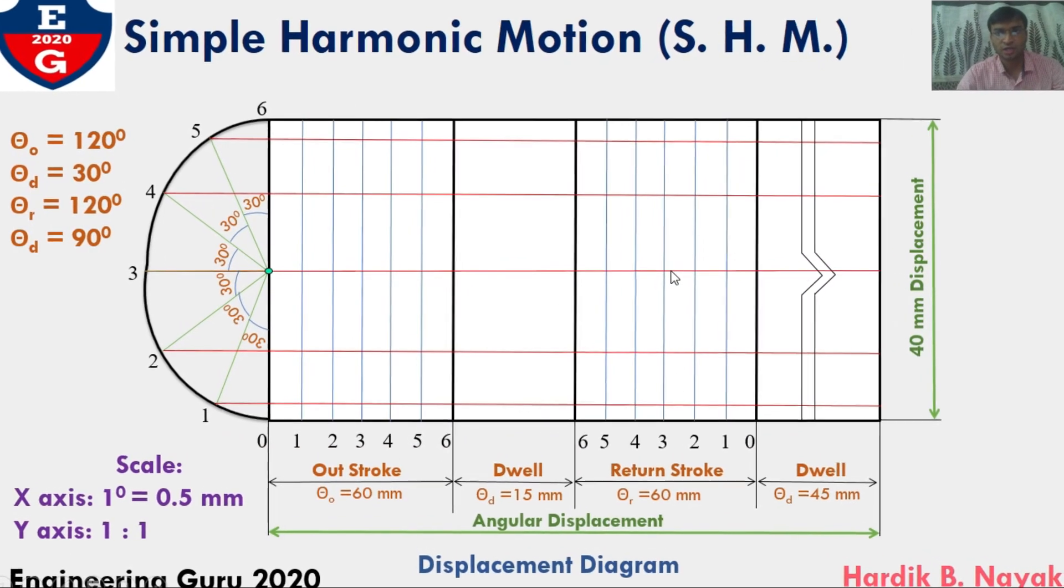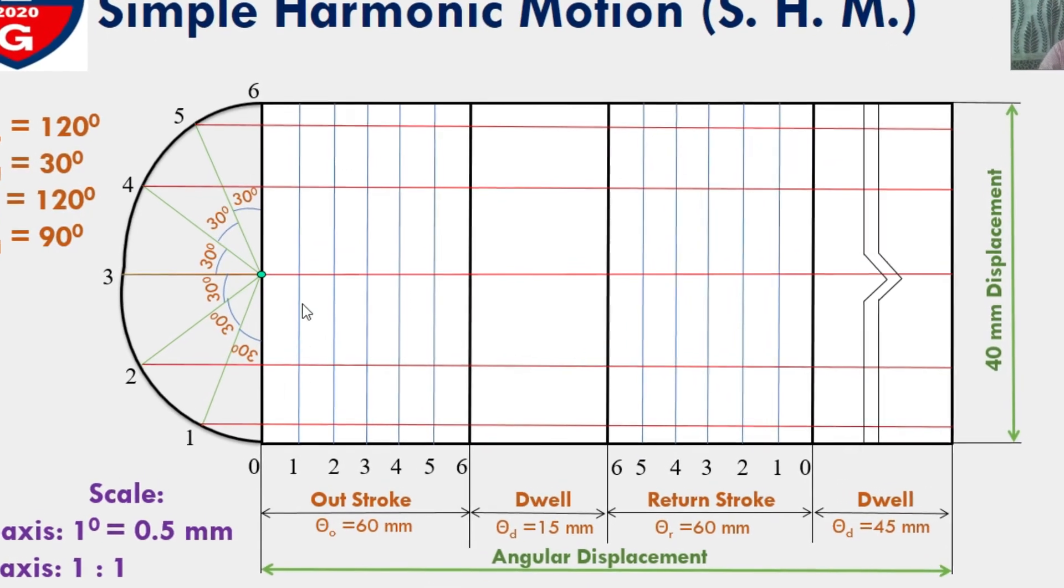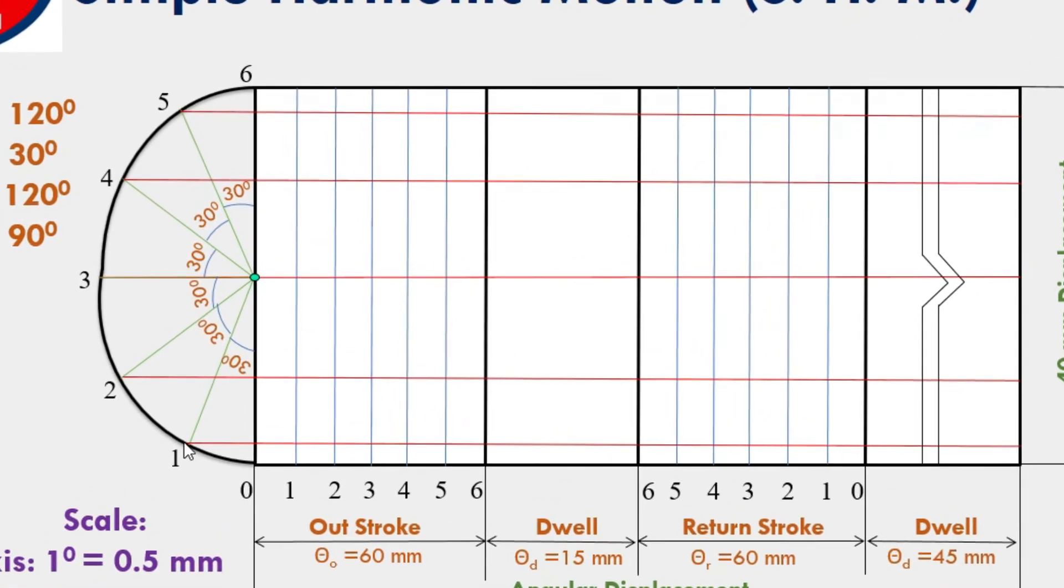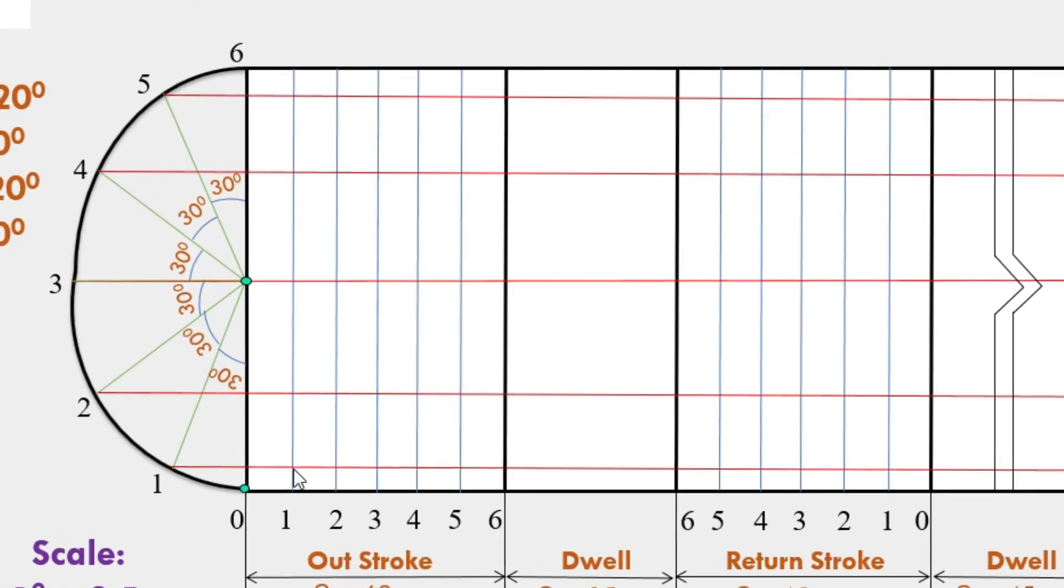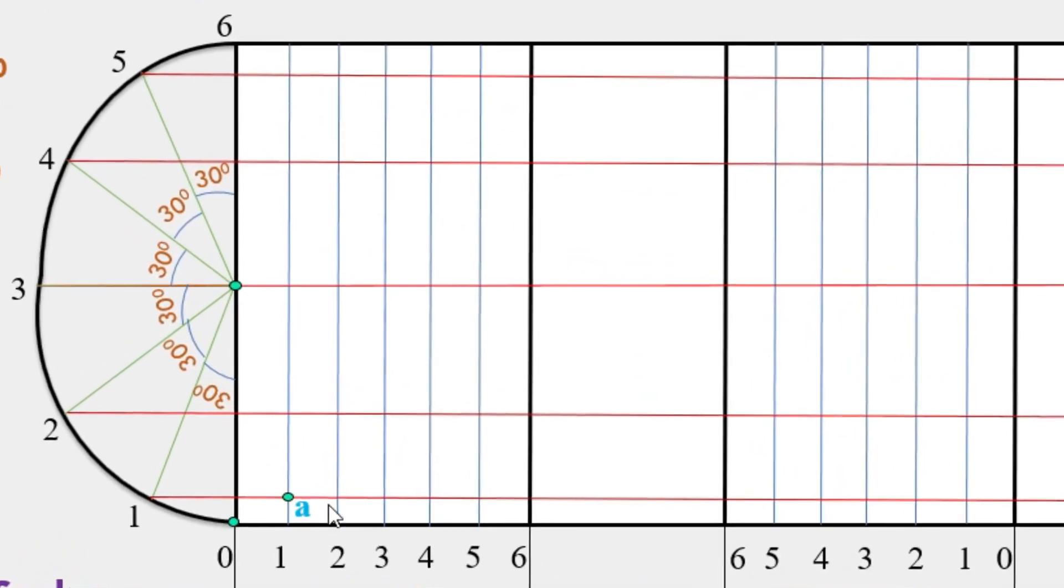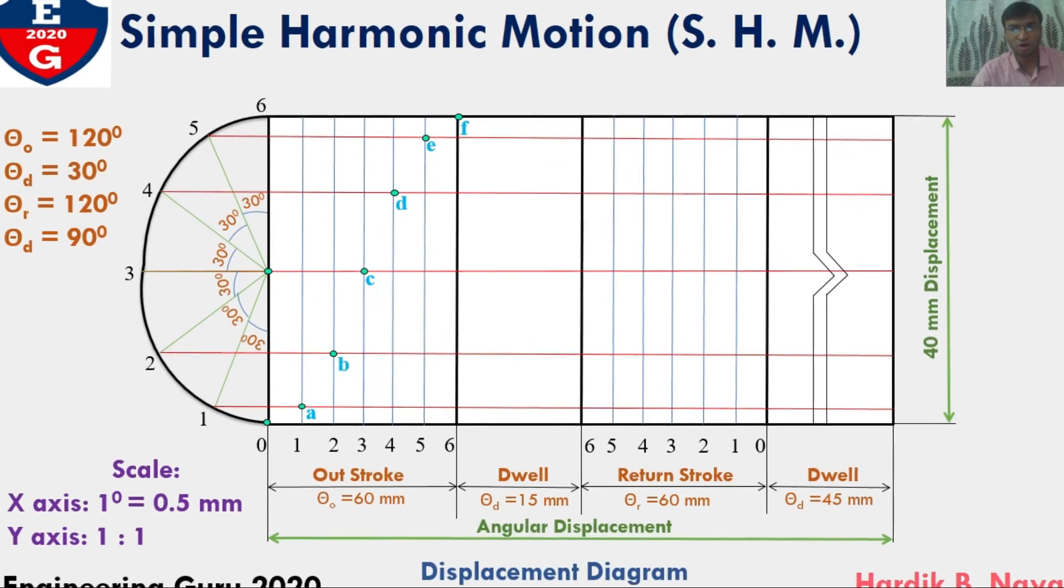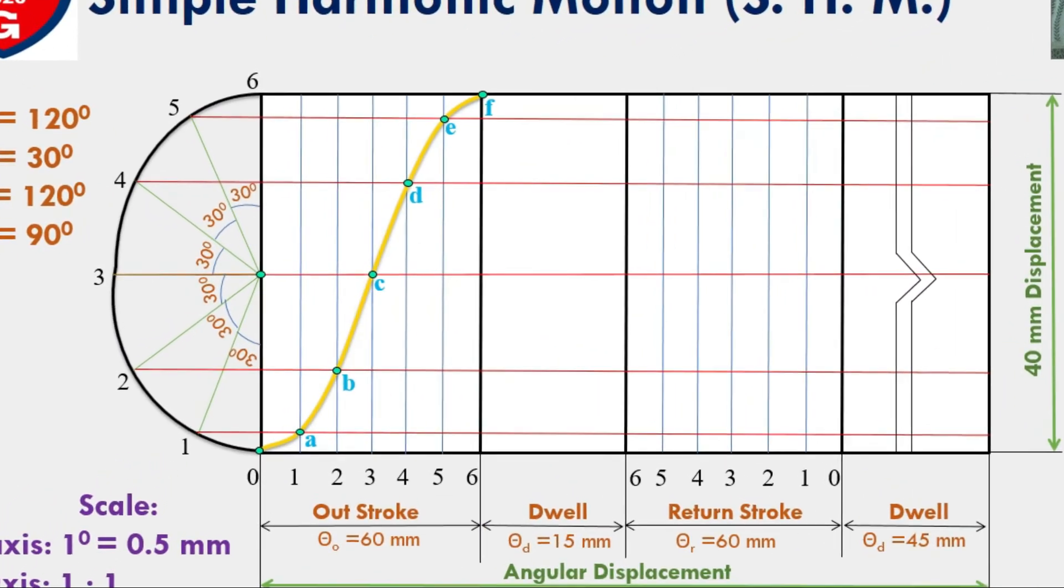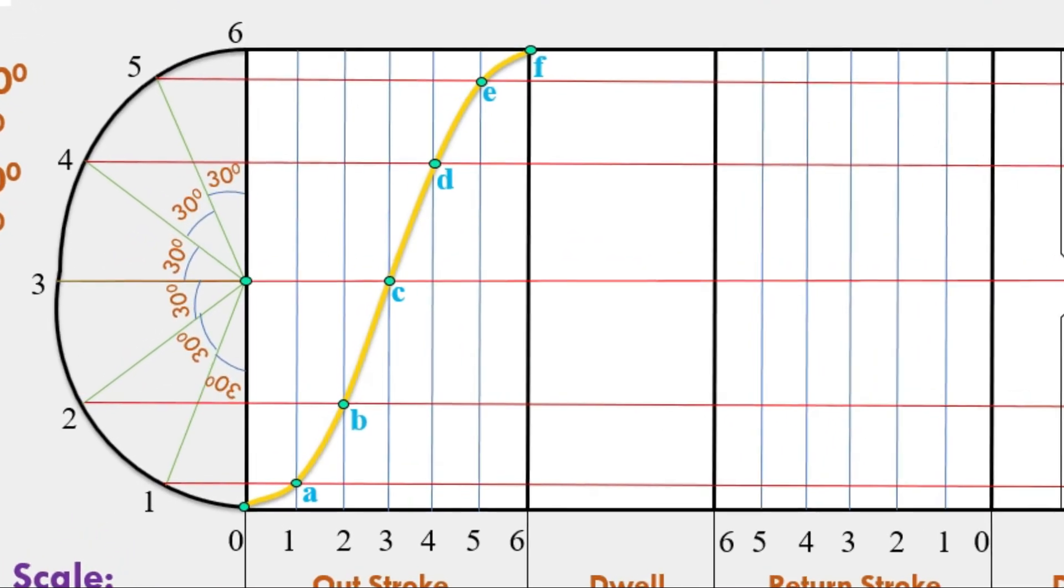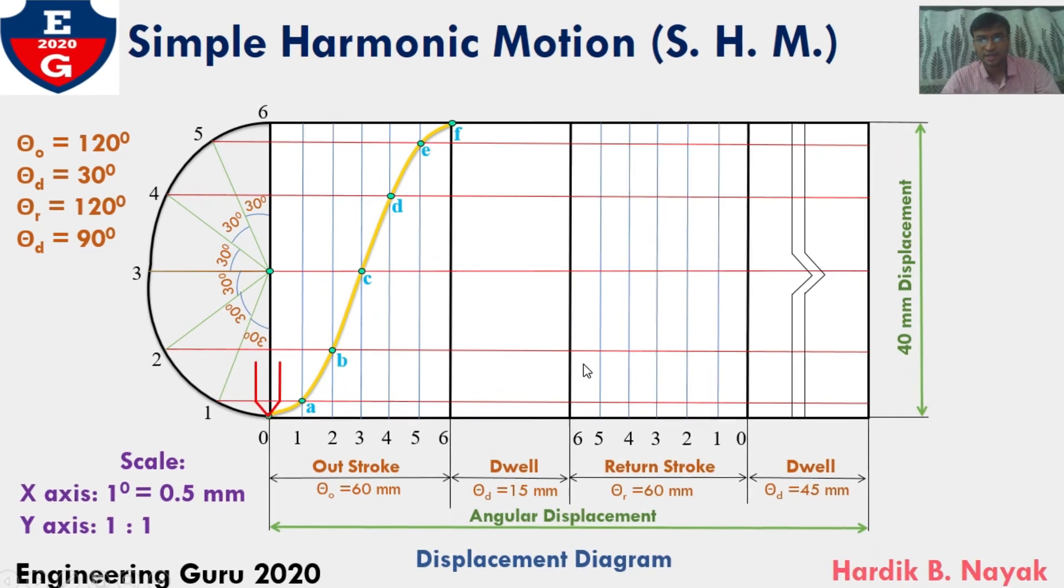During outstroke, in order to plot the points: first division vertical line and semi-circle first division horizontal line intersect here, this is point A. Second division vertical line and semi-circle second division horizontal line intersect here, this is point B. Find out point C, point D, point E, and point F in the same way. I am assuming knife edge follower.